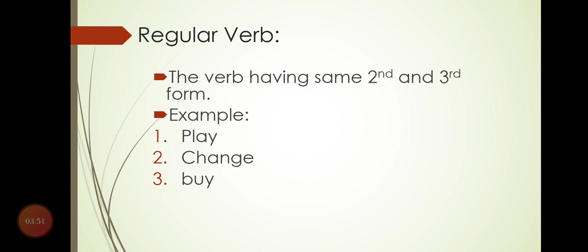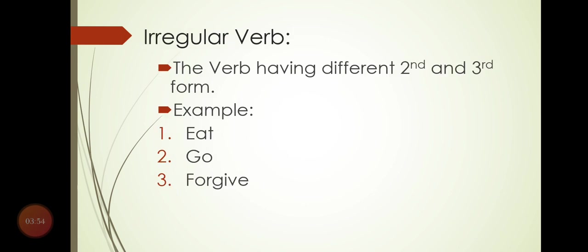Irregular verbs are verbs having different second and third forms — the definition is completely opposite to regular verbs. For example: 'eat' — the second form is 'ate' and the third form is 'eaten,' both different in spelling and pronunciation. 'Go' — 'went,' 'gone.' 'Forgive' — 'forgave,' 'forgiven.' So verbs where the second and third forms are completely different are irregular verbs.